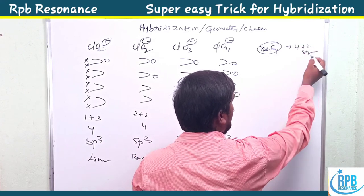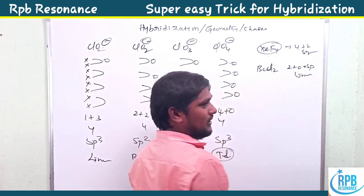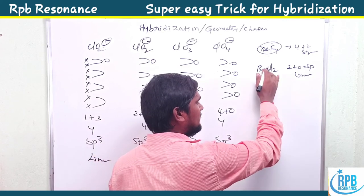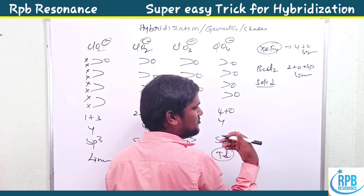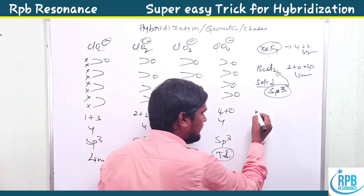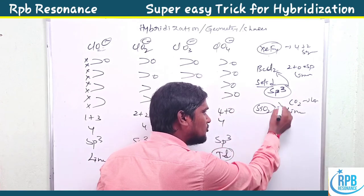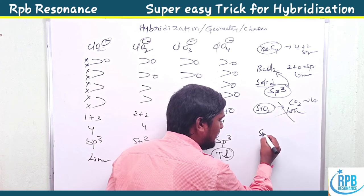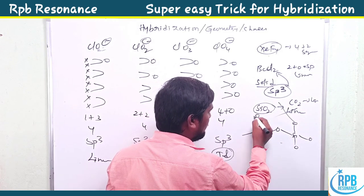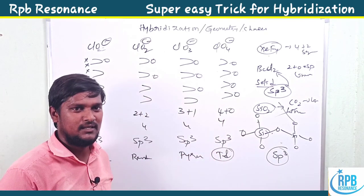XeF4 is four plus two equals six — sp3d2, square planar. For BeCl2, the simple calculation gives two plus zero equals two — sp hybridization, linear — which is correct for the gas phase. However, in the solid state it appears in a dimeric form with four chlorine atoms around beryllium, making it sp3 in the solid state. Similarly, SiO2 seems linear like CO2, but it forms a polymeric structure with four bonds around silicon, so it is actually sp3 hybridized.